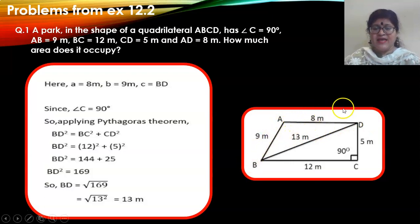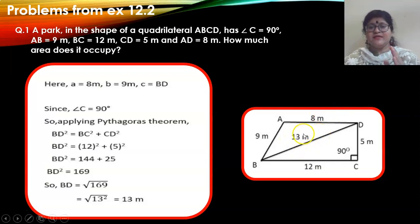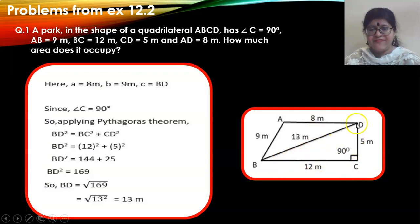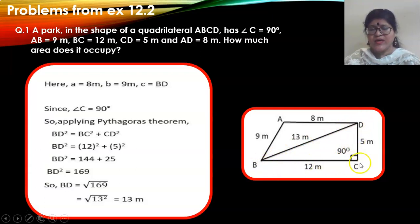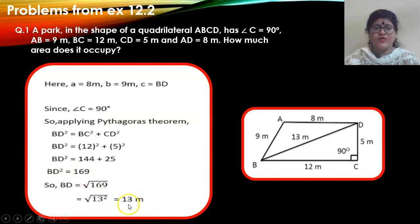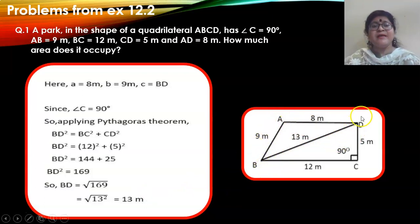They have also given the values of AB and AD. After drawing the quadrilateral, you have to decide which triangle to calculate first — triangle BCD or triangle ABD. What we have done here is first find the value of BD using Pythagoras theorem. Since it is a right-angled triangle, BD² = DC² + BC² = 5² + 12² = 169, so BD is 13 meters.